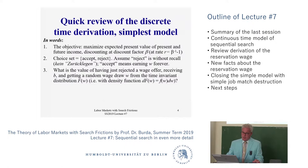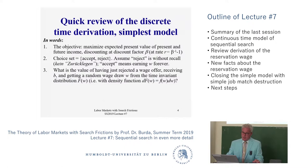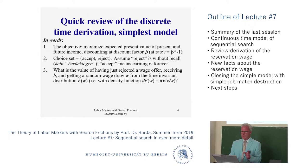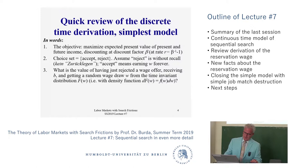The idea of a reservation strategy implies that you have to compare two strategies: one is to reject, one is to accept. Having just rejected a wage offer, the question is what's the value of this project going forward? If you reject, you get income from unemployment B during this period, and at the end of that period you get another draw from the distribution. The value of unemployment, given the stationary distribution, is always the same.